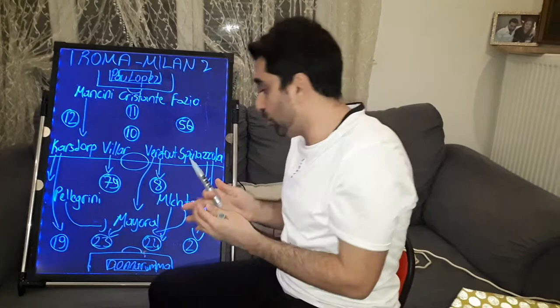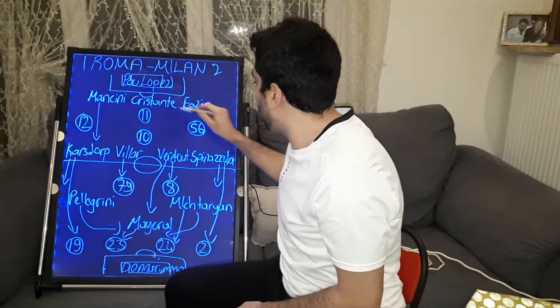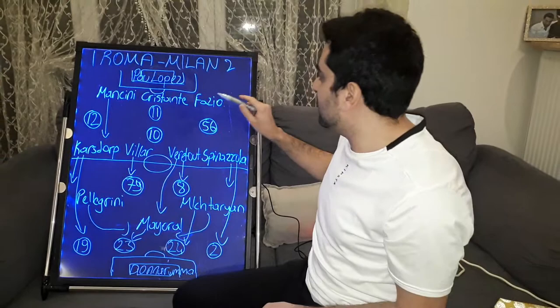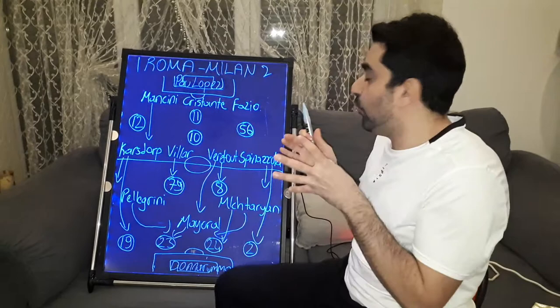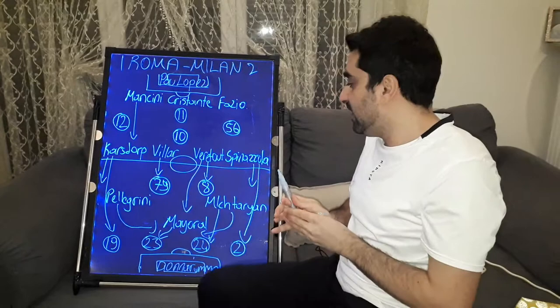Federico Fazio caused a penalty in the first half, making a foul on Calabria. Milan scored from the penalty spot with Kessie, and the first half finished 1-0 with Milan ahead.